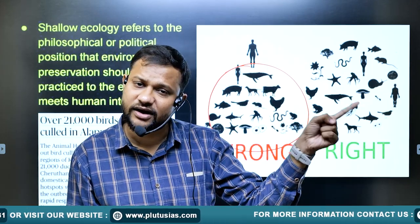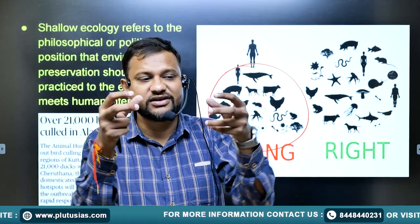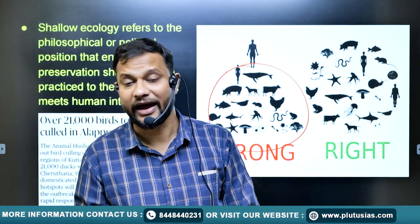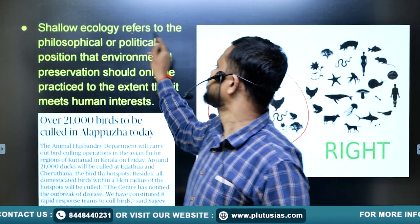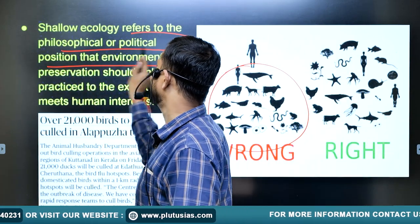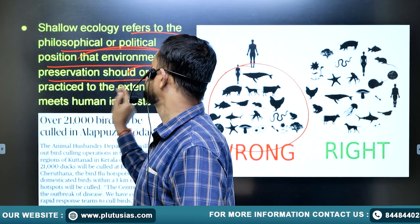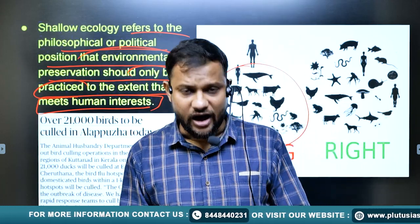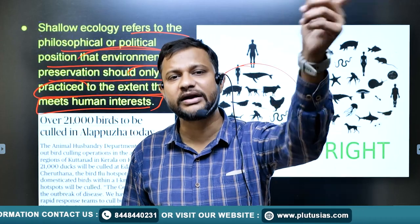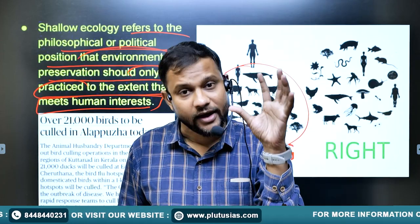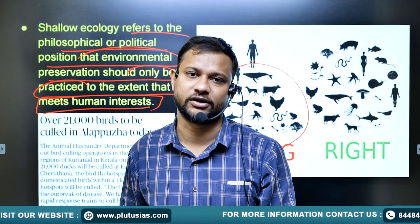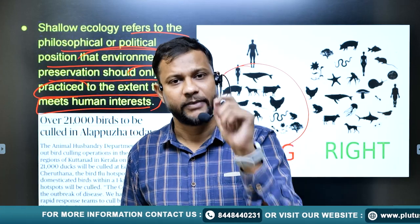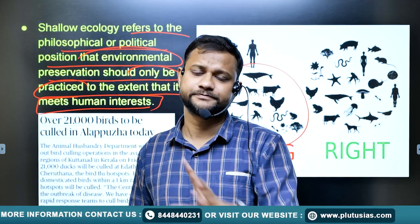Deep ecology is rather broad, which considers the existence of every living and non-living being as of prime importance and interrelated as well. Shallow ecology refers to the philosophical and political position that environmental preservation should only be practiced to the extent that it meets human interest — meaning, why protect the environment? Because humans need a peaceful and sustainable environment. Not for the tiger, not for the evergreen forest, or any other species, but for the purpose of human beings.